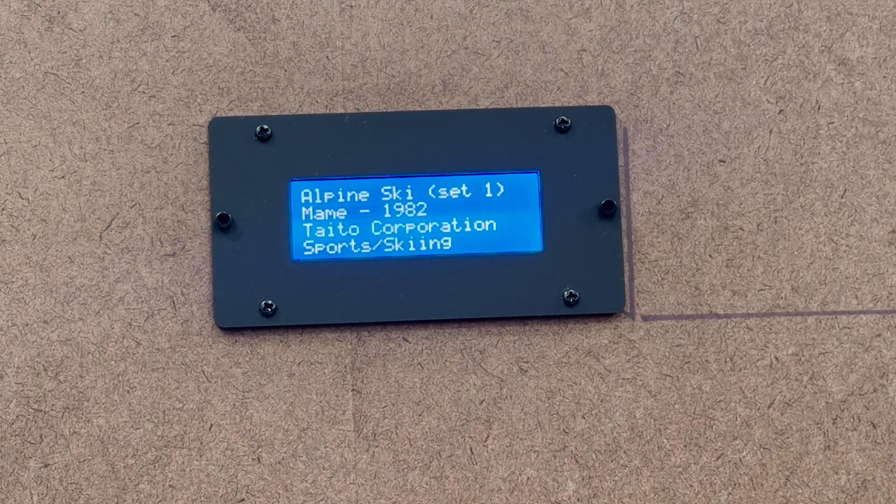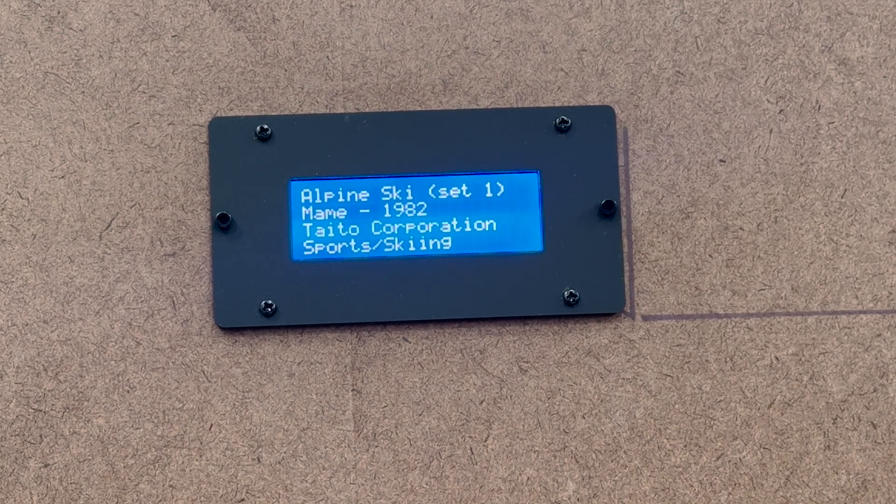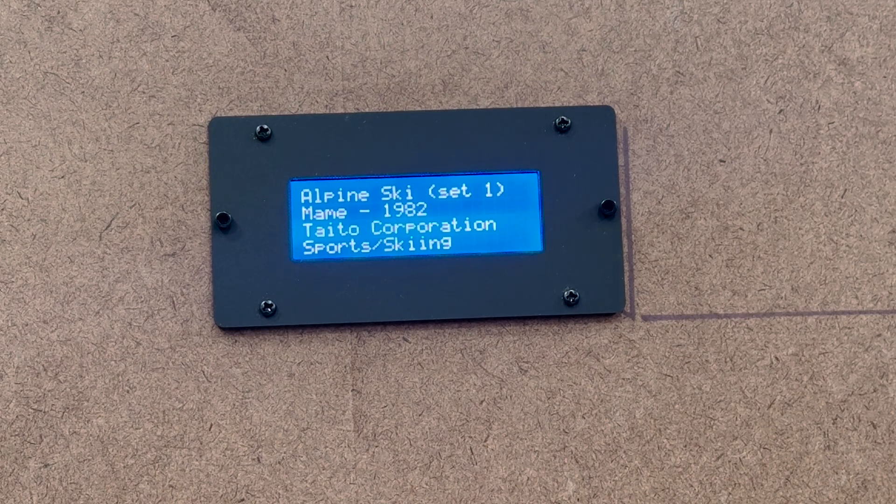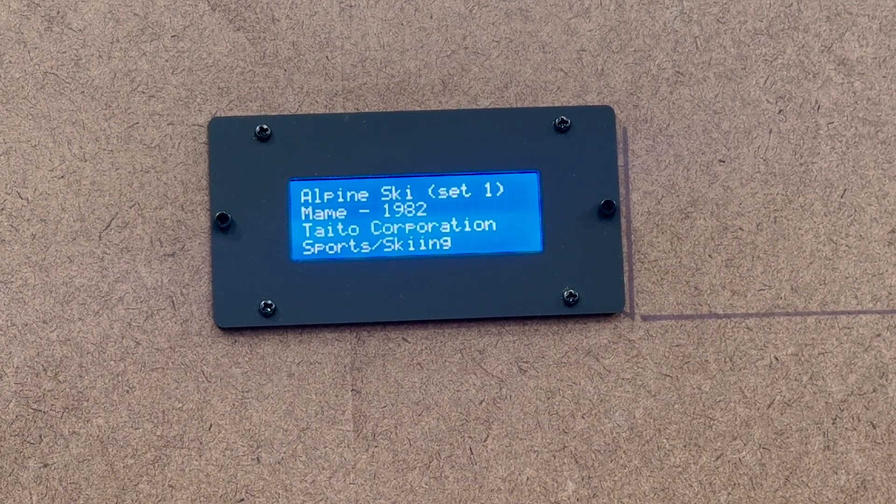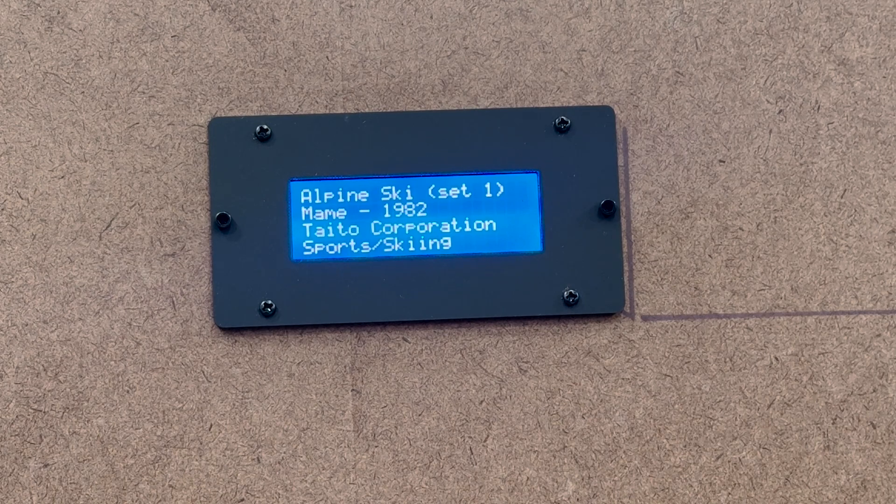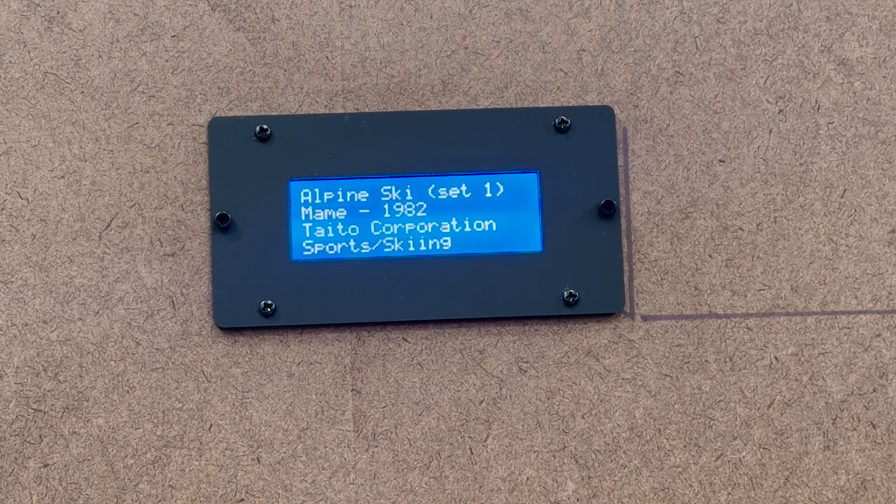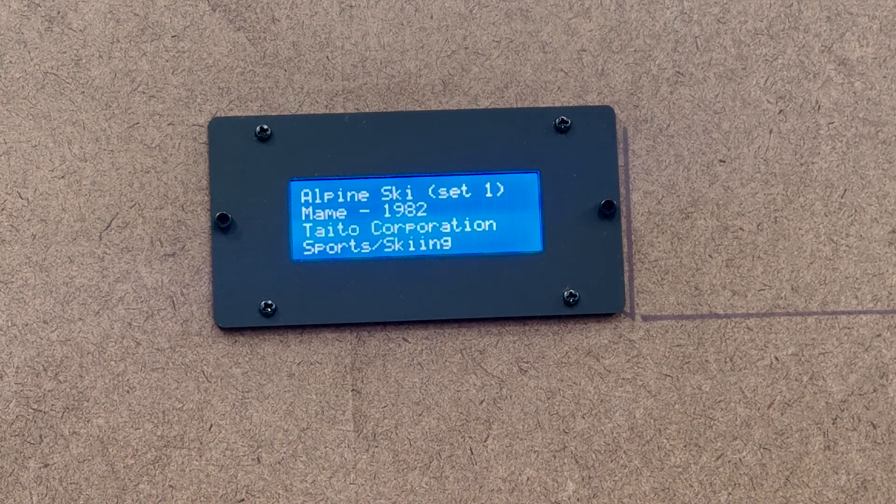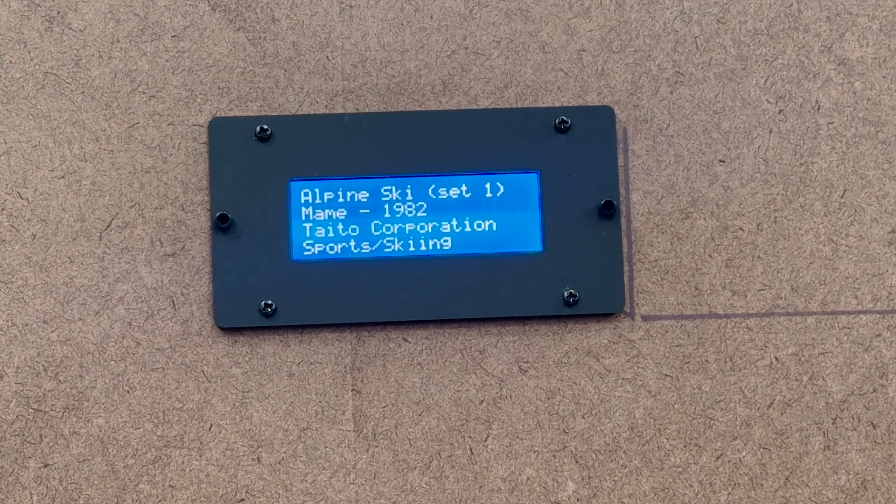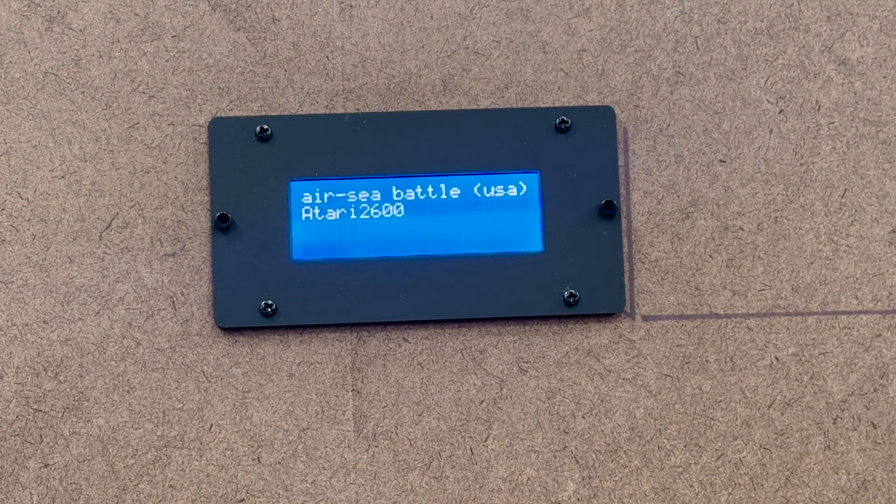Now note that MAME games generally will have metadata, but for other games, like for example Atari 2600, you won't see the metadata there. You're basically just going to see the name of the game and then the platform.